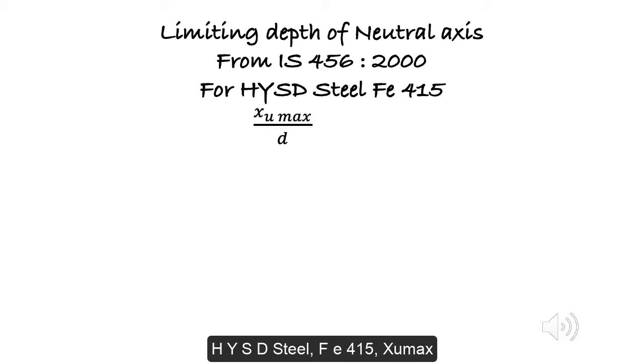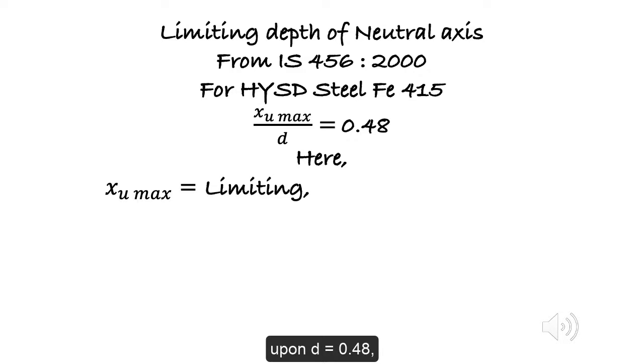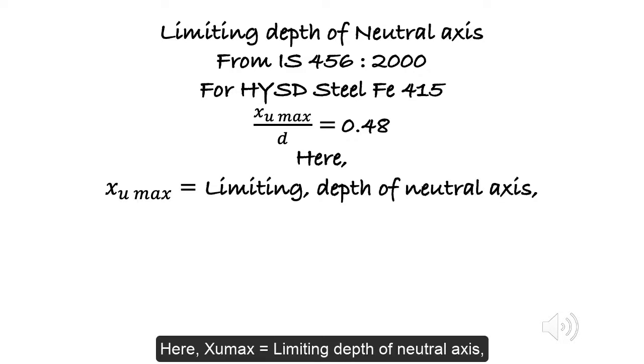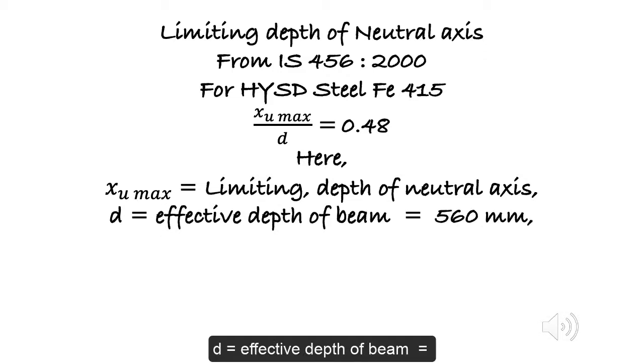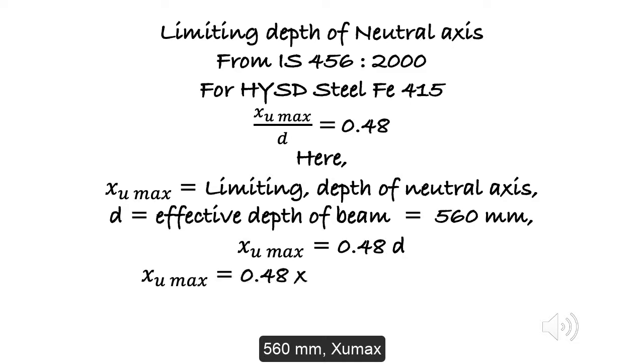Limiting depth of neutral axis. From IS 456:2000, for HYSD steel FE 415, XU MAX upon D equals 0.48. Here, XU MAX equals limiting depth of neutral axis, D equals effective depth of beam equals 560 millimeters. XU MAX equals 0.48 D. XU MAX equals 0.48 by 560 equals 268.8 millimeters.